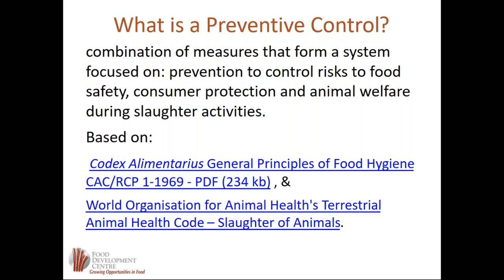Preventive controls are based on the Codex Alimentarius General Principles of Food Hygiene and the World Organization of Animal Health and Terrestrial Animal Health Code. That is what the CFIA is basing their preventive control requirement on.